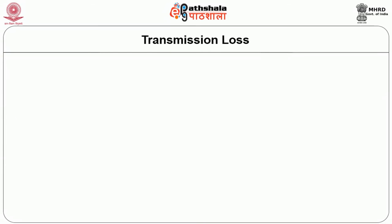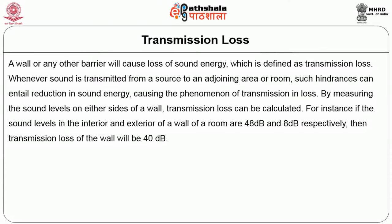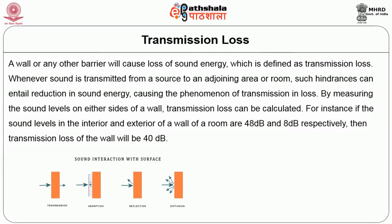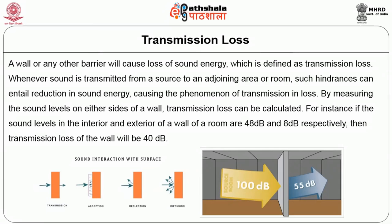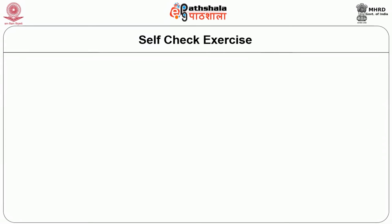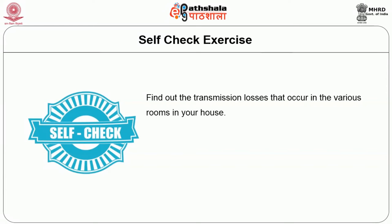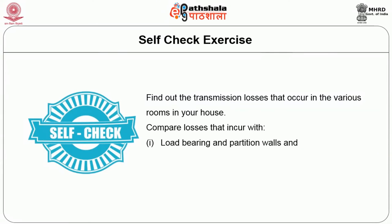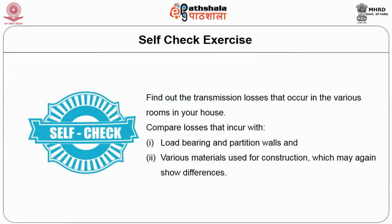A wall or any other barrier will cause loss of sound energy, which is defined as transmission loss. Whenever sound is transmitted from a source to an adjoining area or room, such hindrances cause reduction in sound energy. By measuring sound levels on either side of a wall, transmission loss can be calculated. For instance, if sound levels on the interior and exterior of a wall are 48 dB and 8 dB respectively, transmission loss of the wall will be 40 dB. Try a self-check exercise: find out the transmission losses in the various rooms of your house.